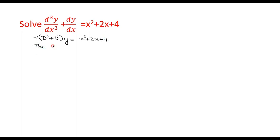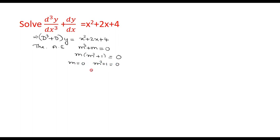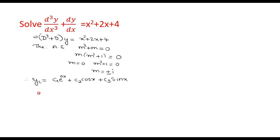Now, find the auxiliary equation of the given differential equation. The auxiliary equation is m³ plus m is equal to 0. Taking m common, m times (m² plus 1) equals 0. So we have m equals 0 and m² plus 1 equals 0, giving m equals plus or minus i. Therefore, the complementary function is c₁e^(0x) plus c₂cos(x) plus c₃sin(x).